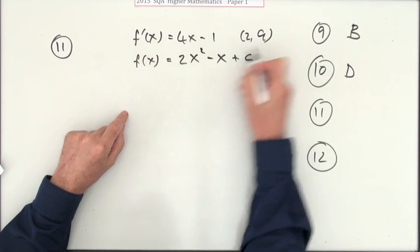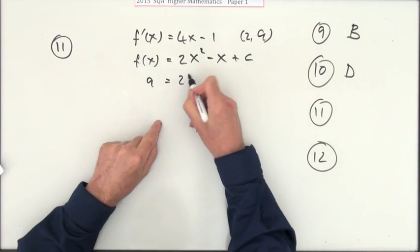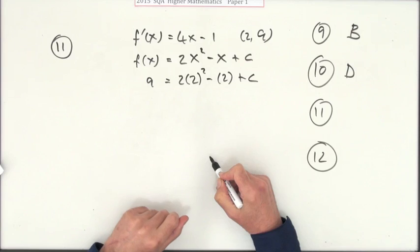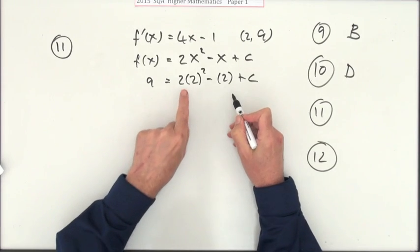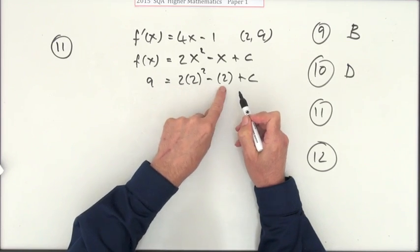Well, that would be the y, so the y is 9. And putting a 2 into this, you've got 2 times 2 squared minus the 2 plus c, so I can work out what c is. So I've got 2 squared is 4, times 2 is 8, but take away 2 is 6.